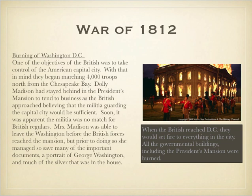When they get to D.C., they end up setting fire to everything, including the president's mansion. Thankfully, a very severe thunderstorm came in later that evening and extinguished the fires much earlier than they would have otherwise. When they repainted the building, the only color able to cover the burn marks was white paint — that is why our White House was painted white and where we get the name the White House, as a result of what happened during the War of 1812.